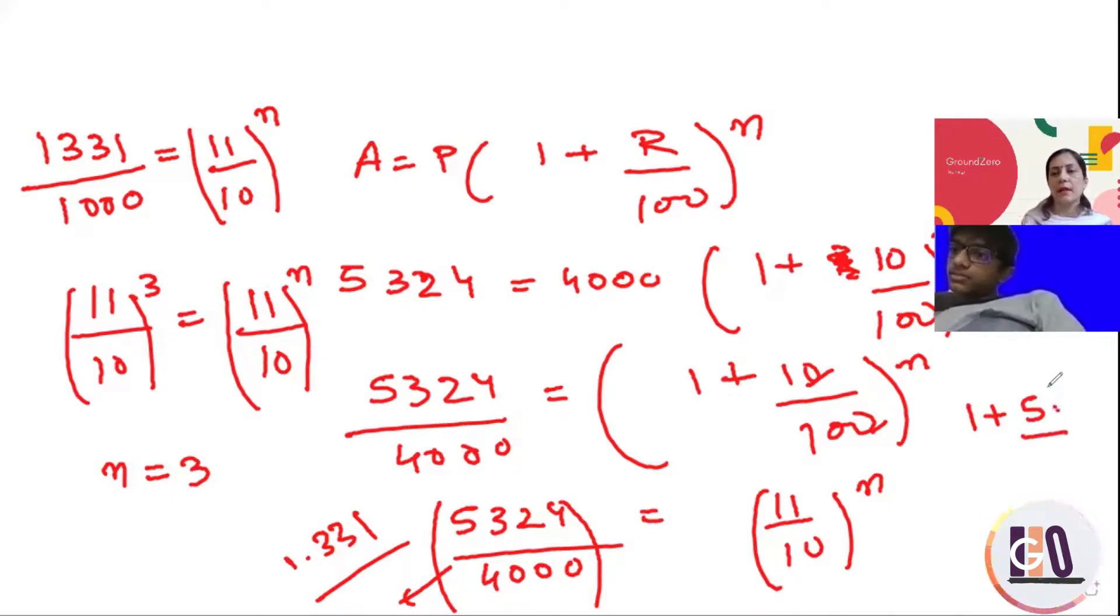It's 10 by 100. It's 10 by 100. Yeah, 10 by 100. Rate is 10. Oh, rate is 10. Yeah, 10 by 100. Oh, rate is 10. Okay. So then it's 1.1. So 1.1 to the power x equal to 1.331. Okay.